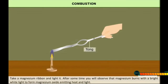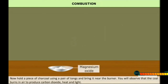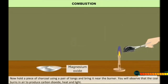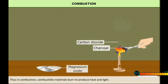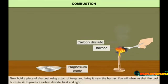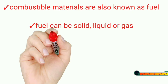Now take a magnesium ribbon and light it. You will observe that the magnesium burns with a bright white light to form magnesium oxide, emitting heat and light. Now hold a piece of charcoal using a pair of tongs and bring it near the burner. You will observe that the coal burns in the air, producing carbon dioxide, heat, and light. Hence it is proved that in combustion, combustible materials burn to produce heat and light. Combustible materials are also known as fuel; fuel can be solid, liquid, or gas.